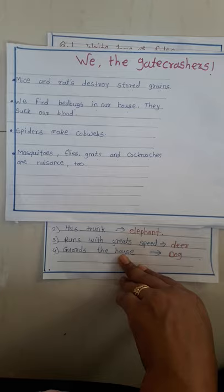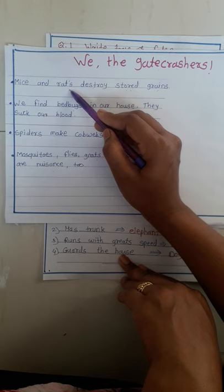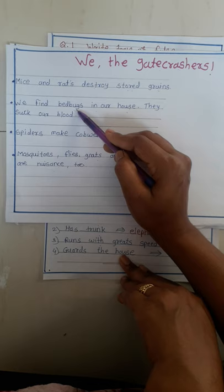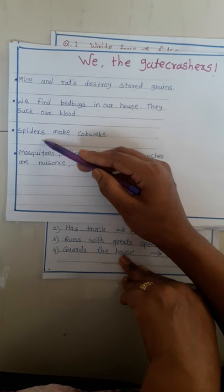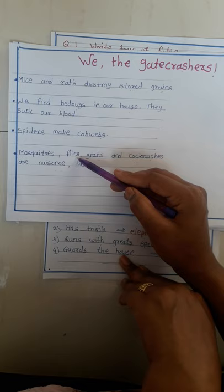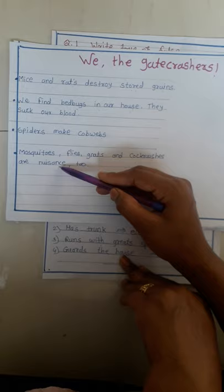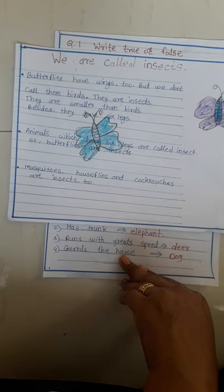Some animals are harmful. Mice and rats destroy stored grains. We find bed bugs in our house — they suck our blood. Spiders make cobwebs. Mosquitoes, flies, gnats, and cockroaches are nuisances too.